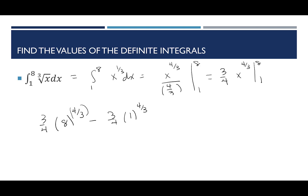Continuing: (3/4)(16) minus (3/4)(1). 3 times 16 over 4 — since 4 goes into 16 four times, that gives 12. So 12 minus 3/4. You could change 3/4 to 0.75 and get 11.25 as the answer. You can leave it in fractions or express it as a decimal — either is fine.